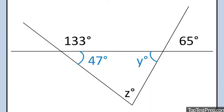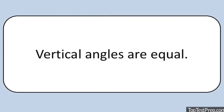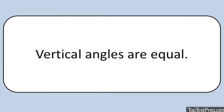Now we need to find Y. Y and the angle labeled in red happen to be vertical angles. And we know, going into it, that vertical angles are equal. Therefore, Y equals 65.